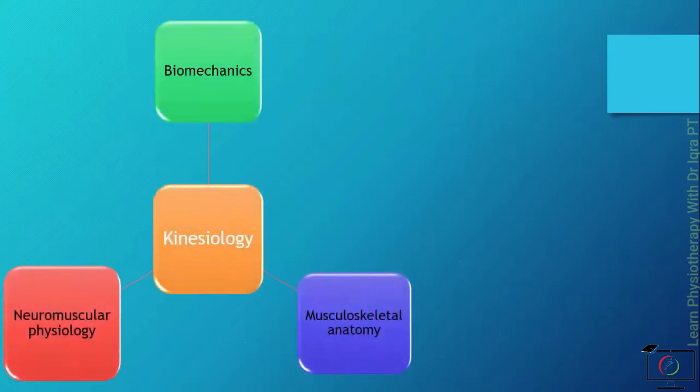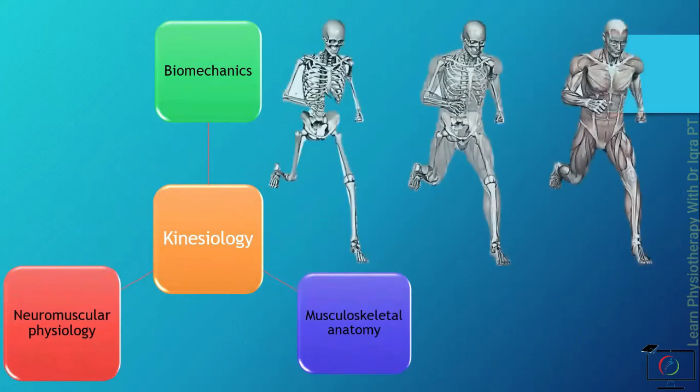Kinesiology utilizes the principles of biomechanics, musculoskeletal anatomy, and neuromuscular physiology. For example, in biomechanics we study the amount and direction of force acting on the body or a particular part. Musculoskeletal anatomy helps us know which structure is causing the movement, and neuromuscular physiology tells us about the mechanism behind that movement.